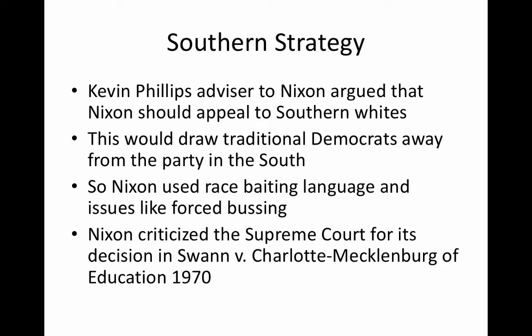Nixon used race-baiting coded language to get people to vote Republican. One of the biggest issues was forced busing. Nixon criticized the Supreme Court case Swann v. Charlotte-Mecklenburg, which said that truly integrated education required forced busing. The problem was demographic segregation — not Jim Crow laws, but the fact that people lived in different parts of cities due to economics, with large white and black populations on opposite sides.